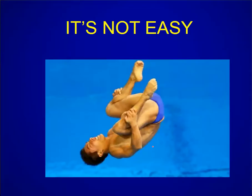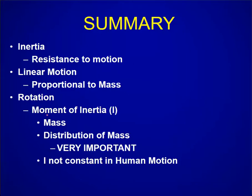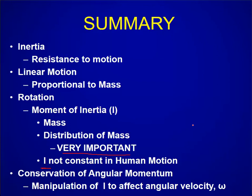It's not easy — there are a lot of forces working to increase the distance of mass from the center of rotation, but these people are very strong and can hold tight tucks. In summary: inertia is resistance to motion in general. Linear inertia is proportional to mass. In the rotational world, moment of inertia resists rotational motion based on both mass and its distribution — that's how we do all the fun things in movement. Moment of inertia is not constant in human motion, and the conservation of angular momentum allows us to manipulate I to affect angular velocity.